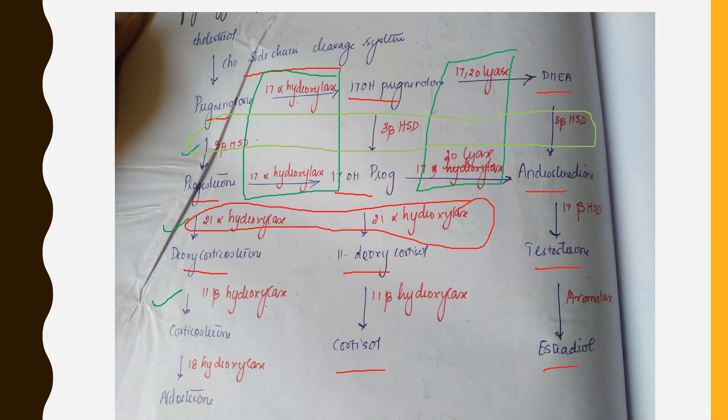3-beta HSD is important for the first steps of conversion in the pregnenolone-to-progesterone line. 21-alpha hydroxylase is important for the first steps of conversion in the cortisol pathway. 11-beta hydroxylase is the same in both the aldosterone and cortisol lines. This is the one chart you need to remember to understand the whole pathology, clinical manifestations, and biochemical changes.